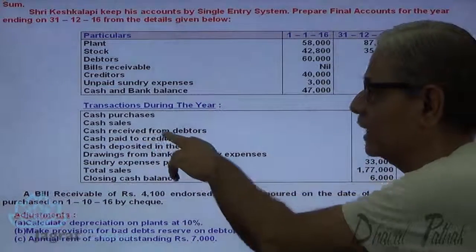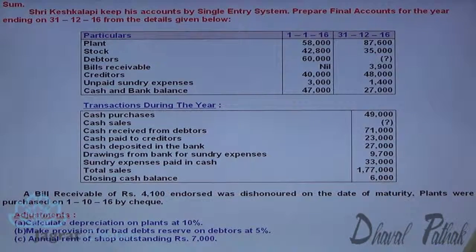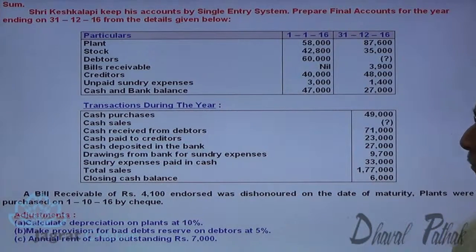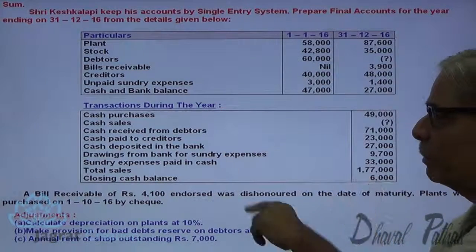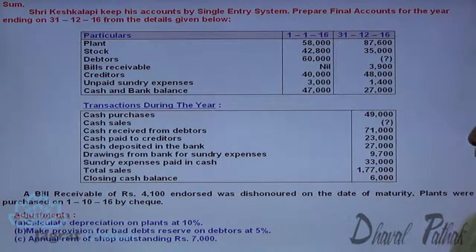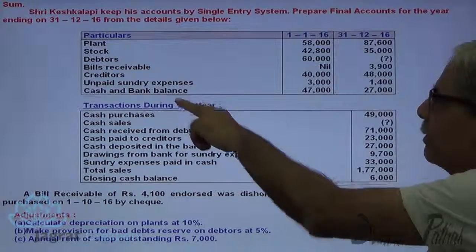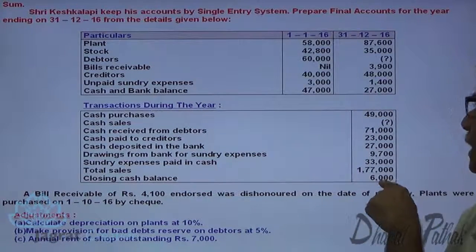The transactions include: cash purchases, cash sales, cash received from debtors, cash paid to creditors, cash deposited in the bank, withdrawn from bank, drawings from bank for sundry expenses (cash withdrawn from bank), sundry expenses paid in cash, total sales, and closing cash balance. Cash and bank balance closing is 27,000, and closing cash balance is 6,000.